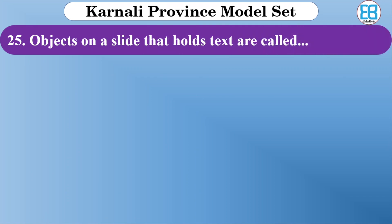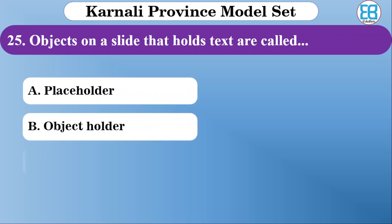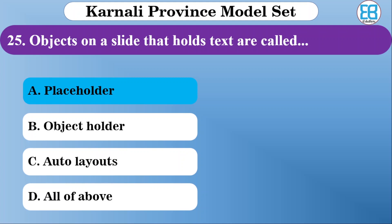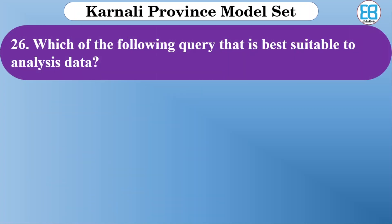The options for text-holding objects on a slide are placeholder, object, or layout. The correct option is placeholder — a placeholder is an object on a slide that holds text.